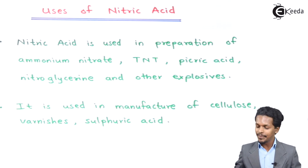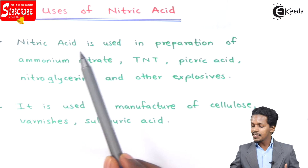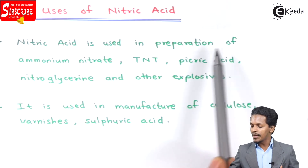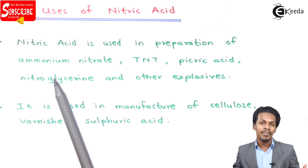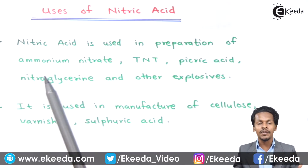Starting with the first use: nitric acid is used in the preparation of ammonium nitrate, and this ammonium nitrate is basically used as a fertilizer.